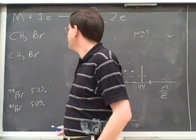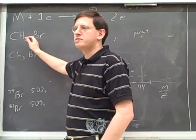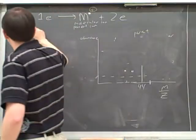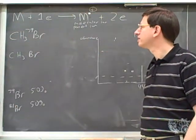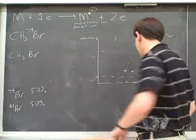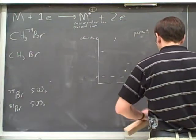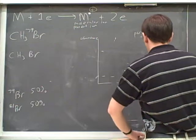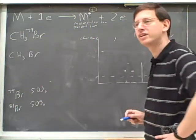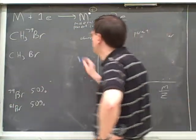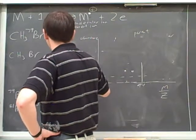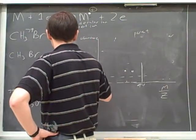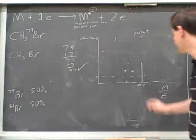Now, what's going to be the horizontal coordinate for this molecular ion? Let's figure out the horizontal coordinate for this molecular ion. 94. 94. 79 plus 12 is 91 plus 3 hydrogens. 94. Good. So that would be at 94.